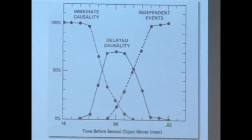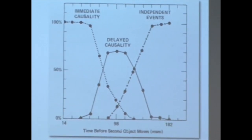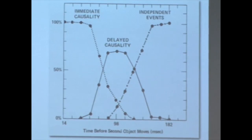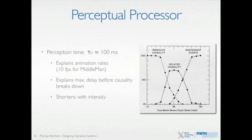If you delay this further to around 200 milliseconds, most people would say these are completely independent — something moves in, stays there, and then at some point the other one goes away. So the perception time of 100 milliseconds means that what happens before that threshold is more often described as having happened for the same cause — continuously.